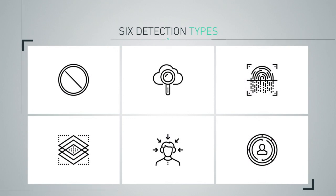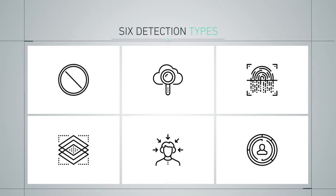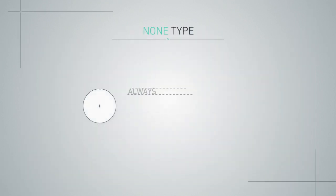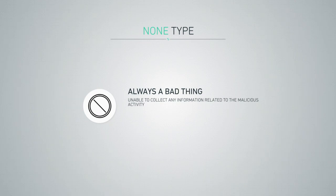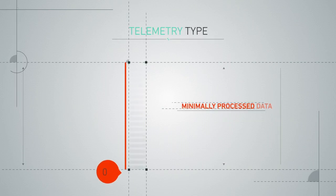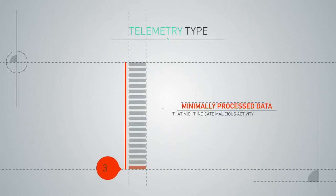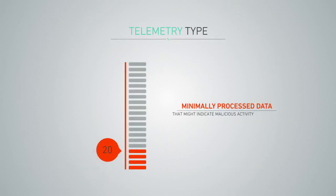When the product is unable to collect any information related to malicious activity, it is given a none type. This is always a bad thing. When the product provides some minimally processed data that might indicate malicious activity, it is given a telemetry type. This is the data collected in the background that might lead to an alert or assist security teams in a later investigation.